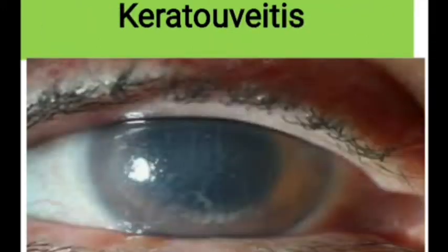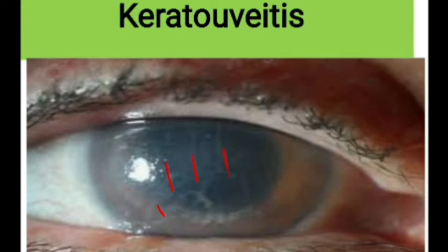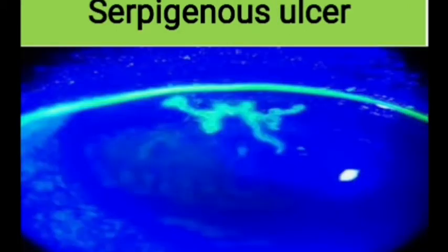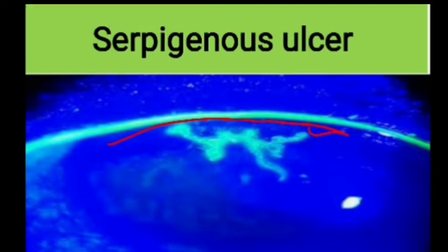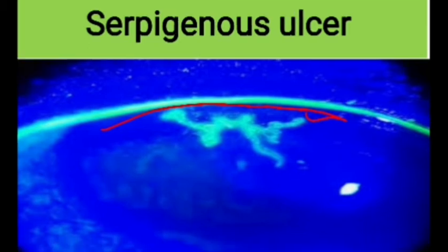Keratouveitis or endothelitis results from direct viral invasion of the endothelium. After several weeks, there is sudden onset of Descemet's folds in the corneal stroma with stromal and epithelial edema, KPs on the endothelium, and severe granulomatous reaction around Descemet's membrane. The serpigenous ulcer involves corneal thinning secondary to limbal vasculitis — there is crescent-shaped peripheral ulceration which can lead to corneal vascularization or even perforation.